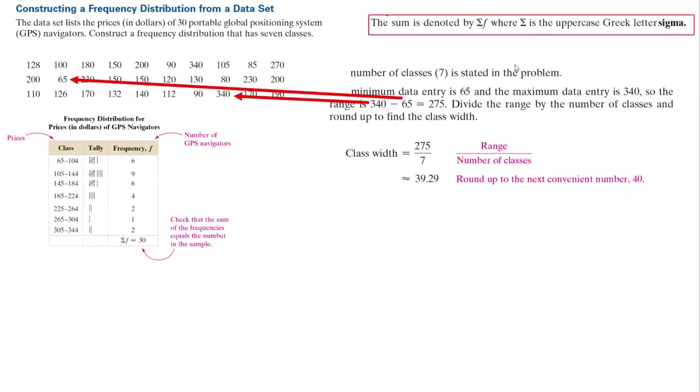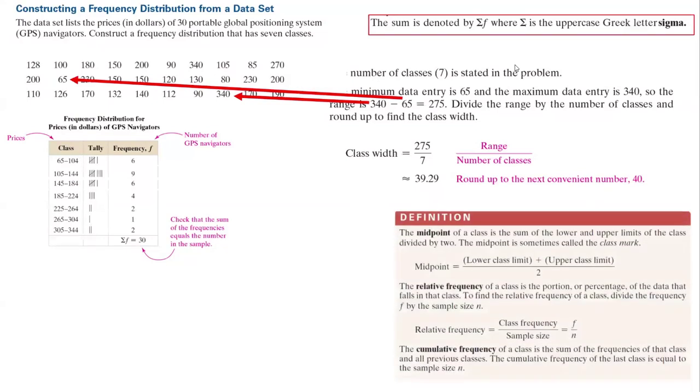We showed that the sum is denoted by sigma f, where sigma is the uppercase Greek letter sigma. In the next step, we need to find the midpoint, relative frequency, and also cumulative frequency.